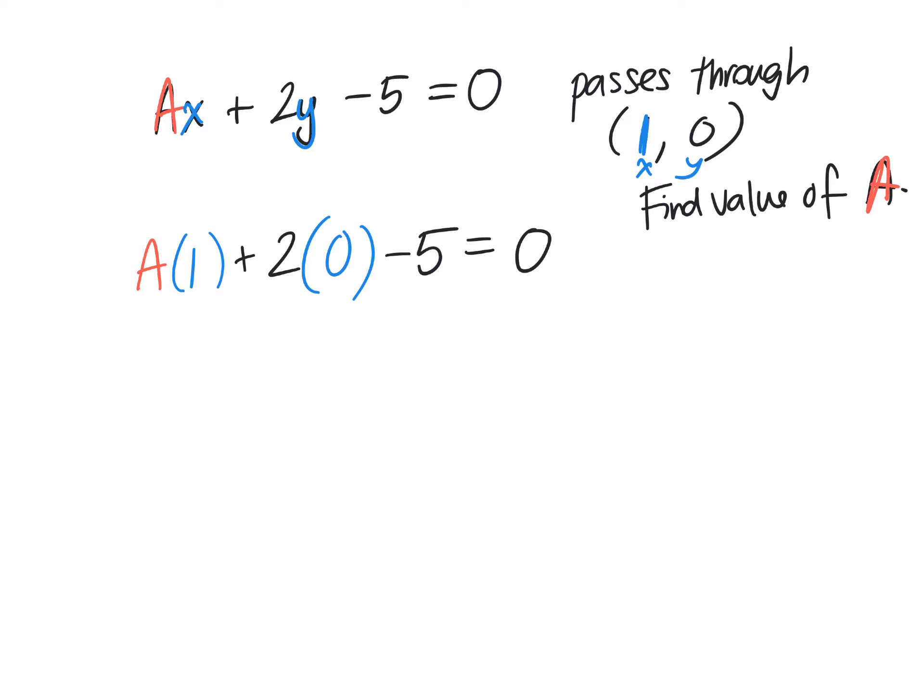How would I write A times 1? You can write 1A, or you can just write A. So this question is actually easier because A is isolated. What is 2 times 0? Take away 5. What's nothing take away 5? Negative 5. So we have A take away 5 equals 0.